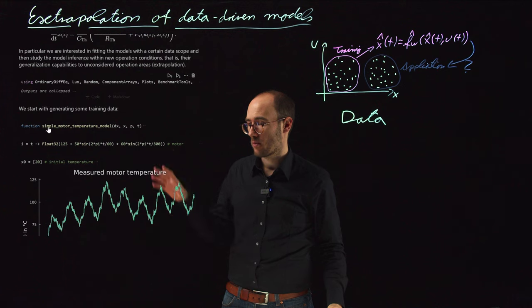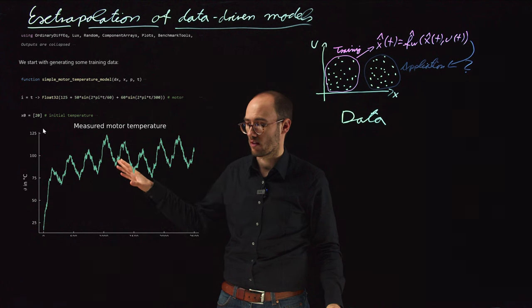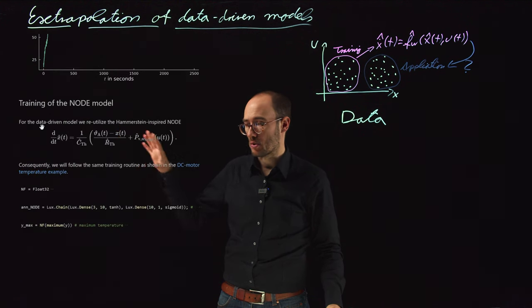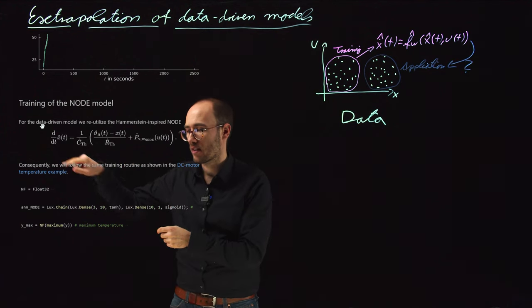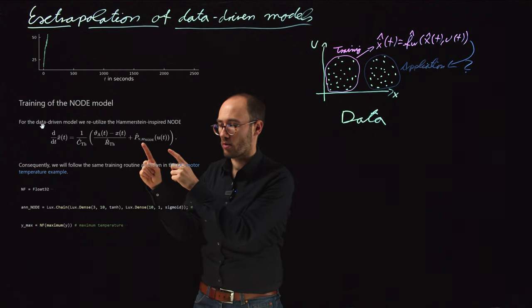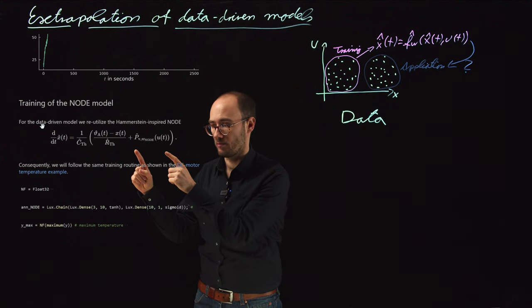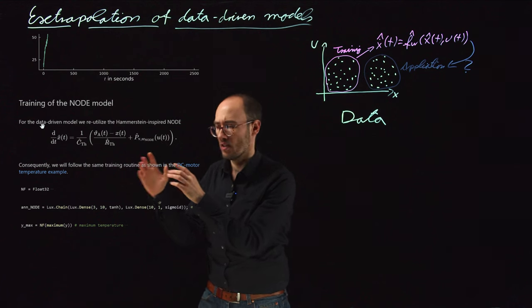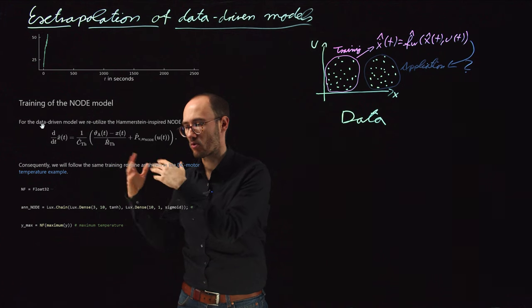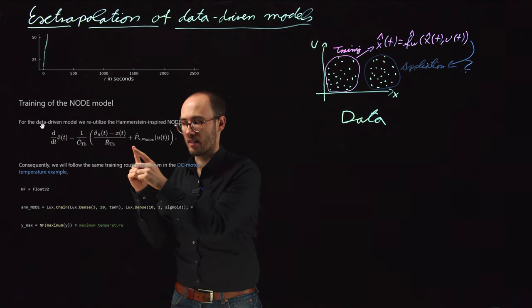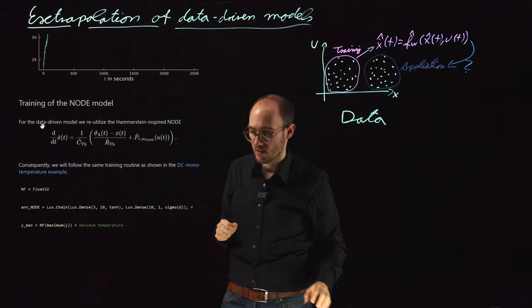So what we do is, we basically follow the previous identification procedure. So we generate some ground truth data, actually the same ground truth data as before. Then we train the NODE model, which is already having some structural knowledge. So we know that the ODE looks like this, and the only structural unknown part was the static input loss model for the input losses to the model, which depend on our observable inputs. So there is already quite some structural pre-knowledge. It's not a black box NODE, but it's a gray box NODE. And the lack of structural pre-knowledge is just with respect to this input loss.